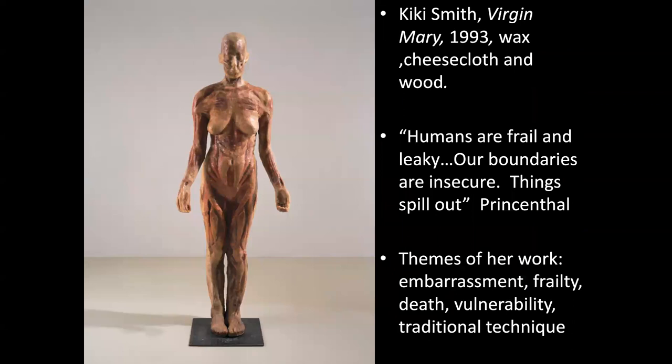This one is the Virgin Mary, and she says humans are frail and leaky — our boundaries are insecure, things spill out. This is something people can relate to if they have a chronic medical condition. Some of the themes of her work, according to her, are embarrassment, frailty, death, and vulnerability.